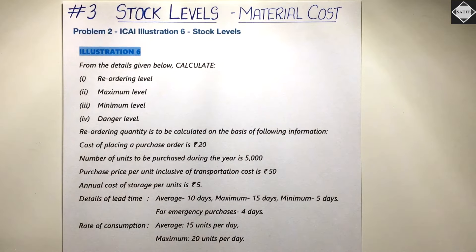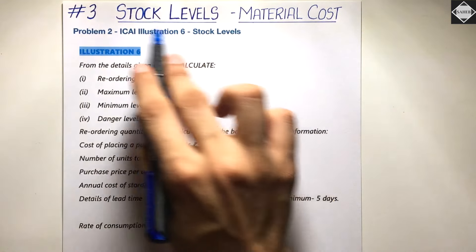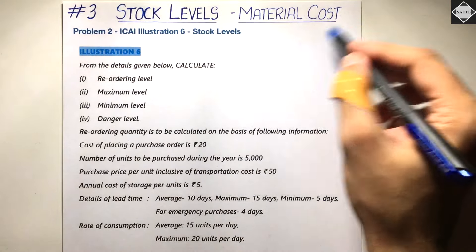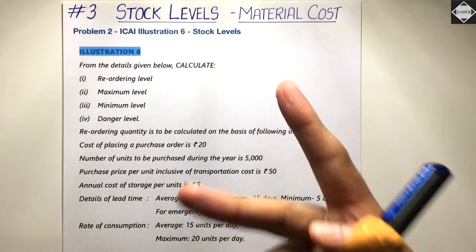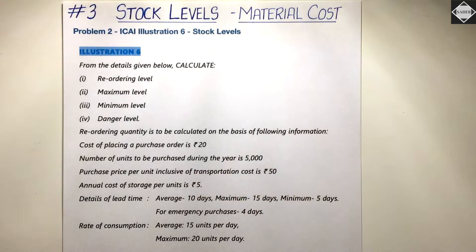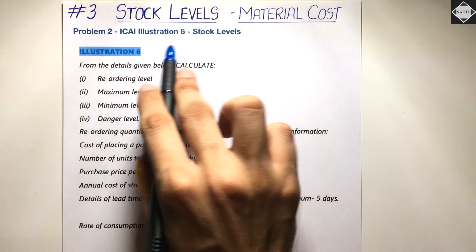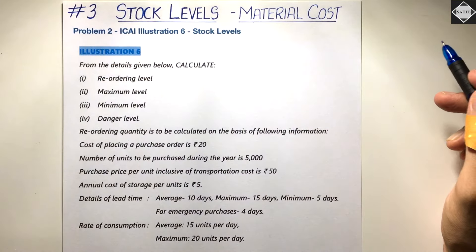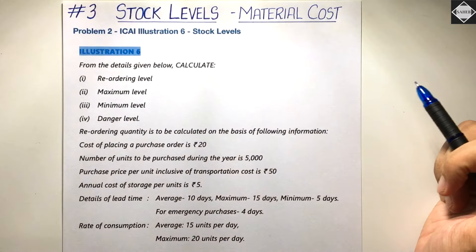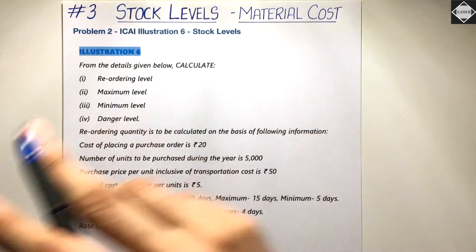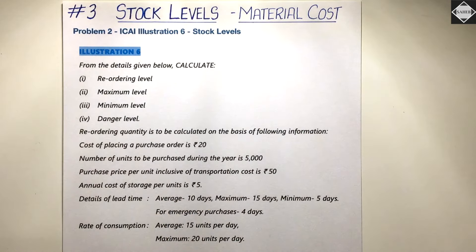Hi everyone, welcome back to Sahab Academy. Today in this third video of the stock level topic of material costing chapter, we are going to solve our second problem of this series. This question is from ICAI study material illustration 6. Before solving this problem, let me tell you what we have done so far in the previous two videos, which you definitely have to watch — I will put the link in the description below.